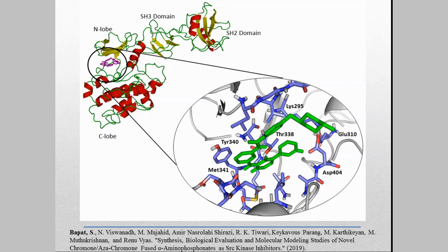You can have basically two types of docking. You can have a protein-ligand docking, the one which is shown here, or you can have a protein-protein docking. Protein-protein docking is done when we want to understand how the protein-protein interaction takes place in your metabolic pathways or your signaling pathways.